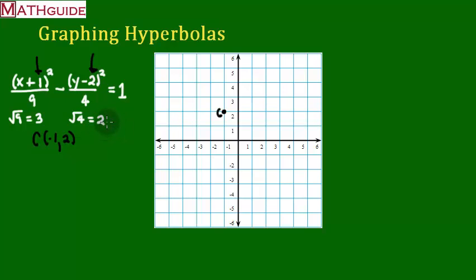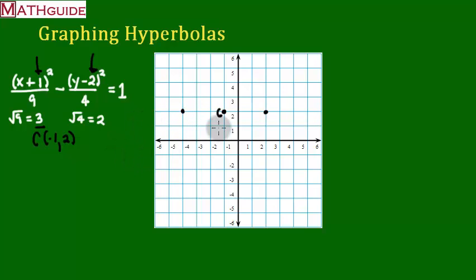What do you do with these new numbers? Since we have this 3, keep in mind that 3 — or this 9 — was originally underneath the x. X is considered a horizontal number. So I'm going to move from the center 3 units right and left — horizontal moves. I'll go 3 units to the right and put a dot, then 3 units left from center and put a dot. Those are going to be endpoints I'll use in a moment.